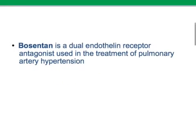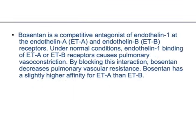Bosentan is a dual endothelin receptor antagonist used in the treatment of pulmonary artery hypertension. Bosentan is a competitive antagonist of endothelin-1 at endothelin A (ETA) and endothelin B (ETB) receptors. Under normal conditions, endothelin-1 binding to ETA and ETB receptors causes pulmonary vasoconstriction.